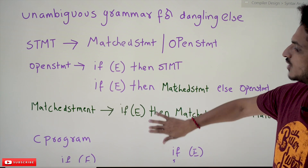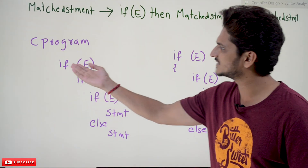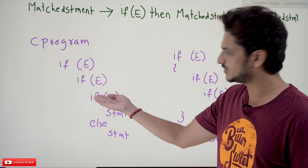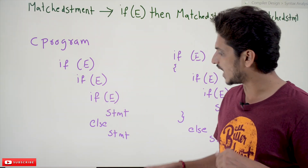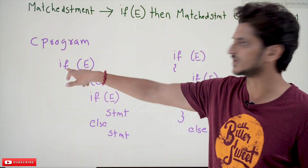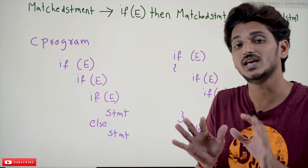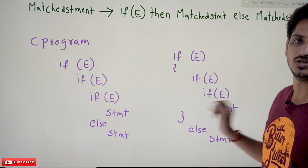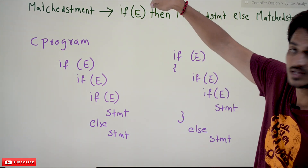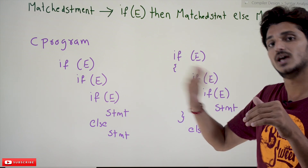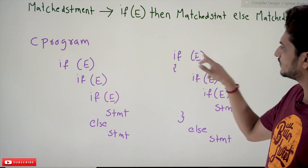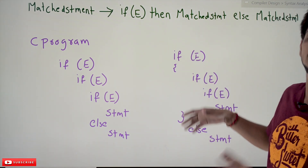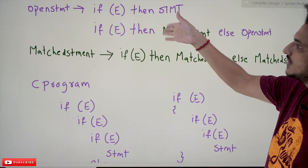In the C programming language, for example, if you write: if expression, if expression, if expression, statement, else statement — this else is automatically assigned to the nearest if. But if you want to assign this else to the first if statement, they changed the language by adding brackets, so you can explicitly write the context-free grammar in compilers to identify to which else the bracket belongs. So the else automatically belongs to the outer if.